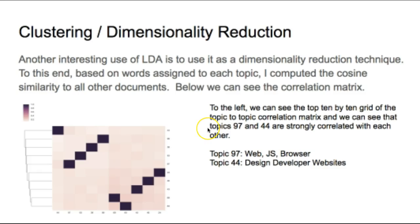Looking at the words for these topics, topic 97 is about web.js and browsers, and topic 44 is about design, developers, and websites. These two topics together could probably form a good web design cluster.